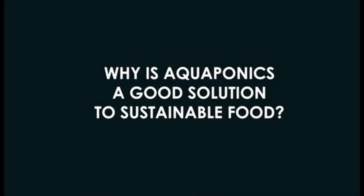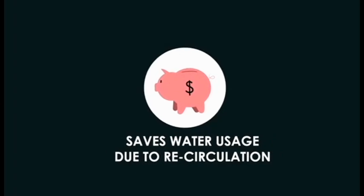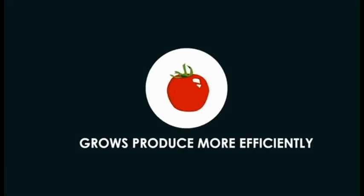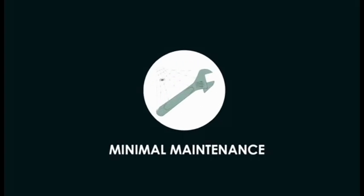Why is aquaponics a good solution to sustainable food? It saves water by recirculation. It avoids pesticides and fertilizers. It grows produce more efficiently. It requires minimal maintenance.